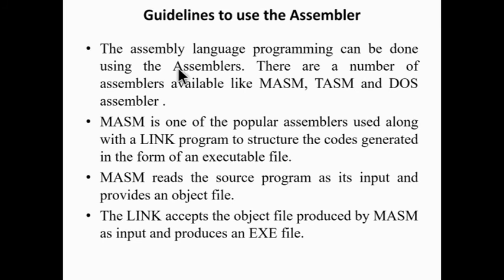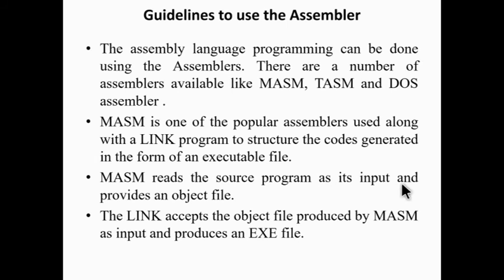Guidelines to use the assembler. Assembly level language programming can be done using assemblers. There are a number of assemblers available like MASM, DASM and TASM. MASM is one of the popular assemblers used along with the link program to produce executable files. MASM reads the source program as input and provides an object file. The LINK program accepts the object file produced by MASM and produces an .exe file.